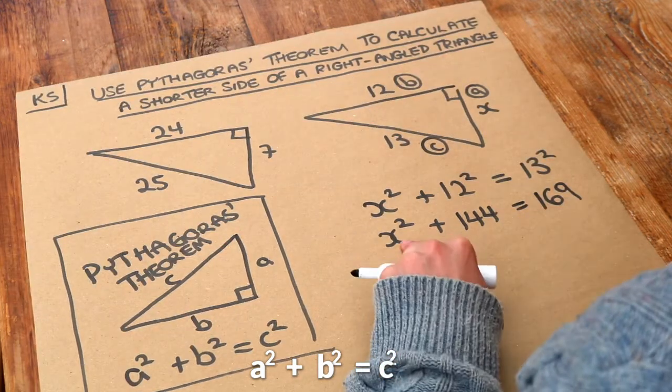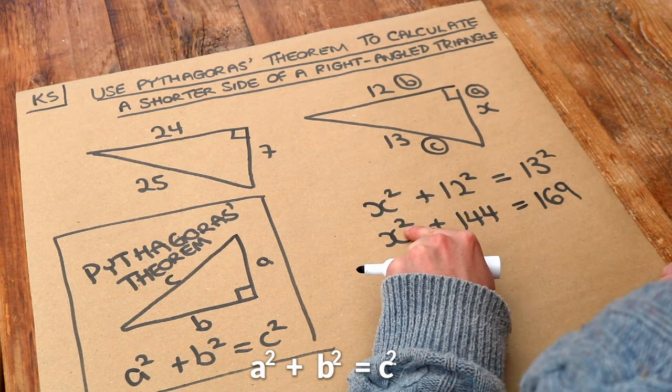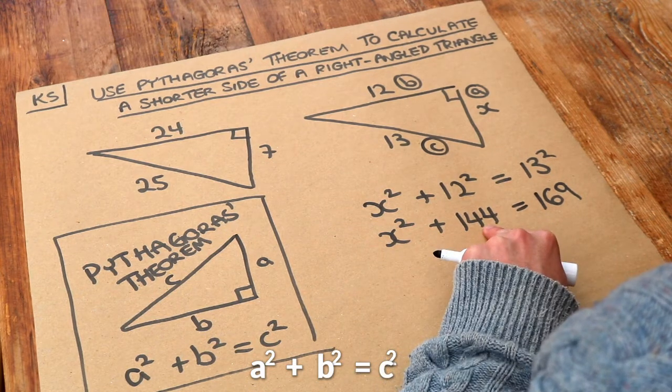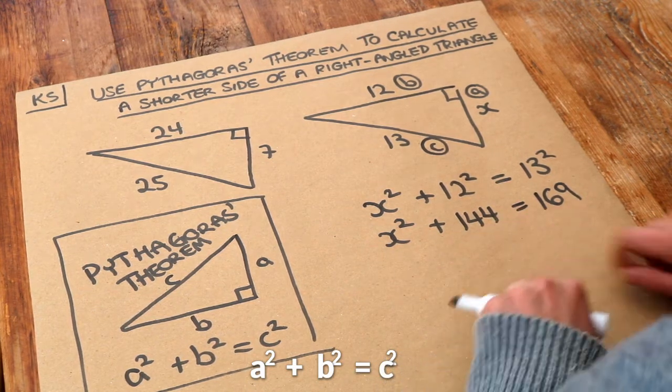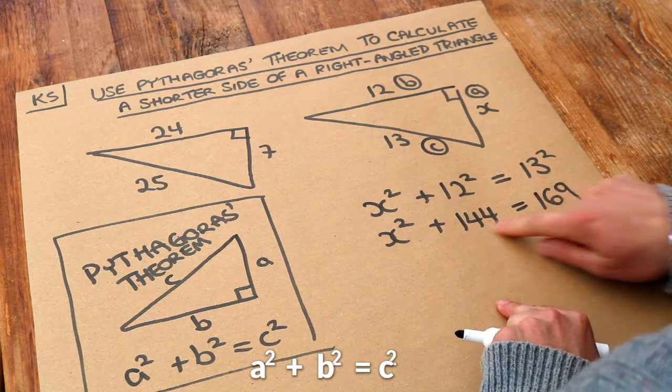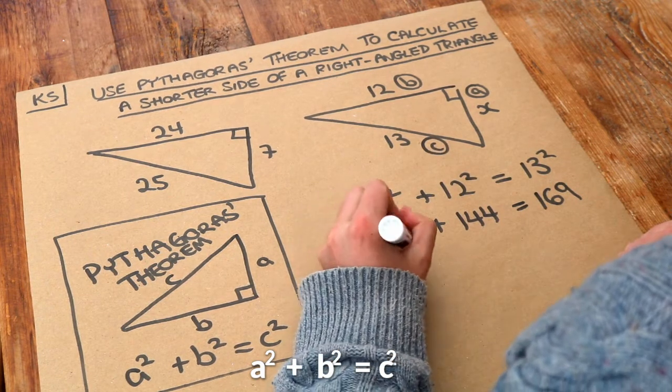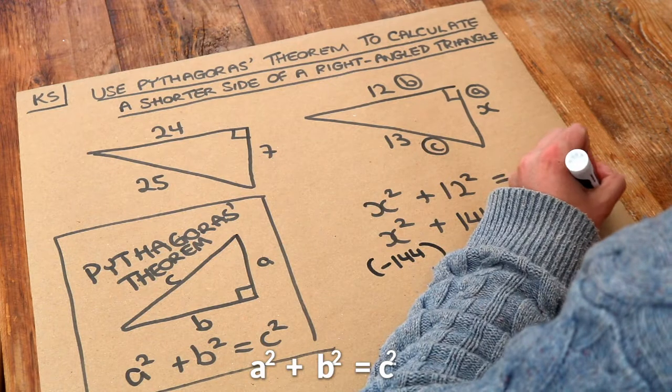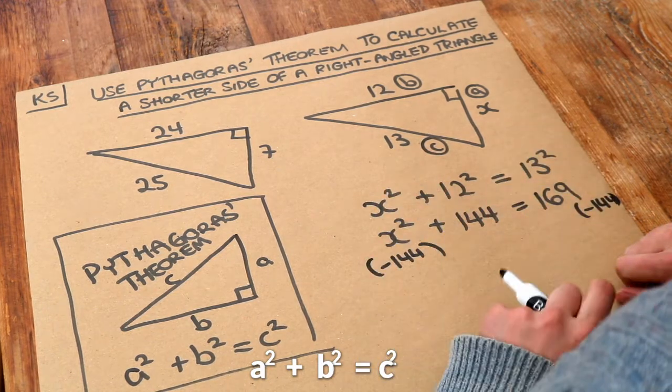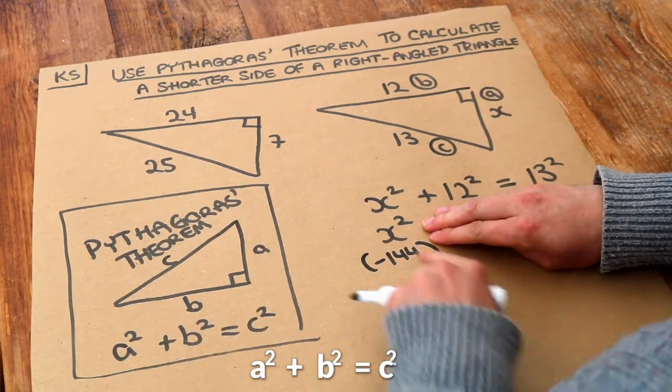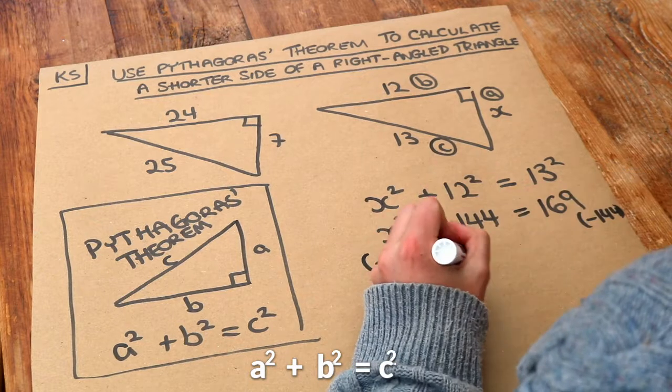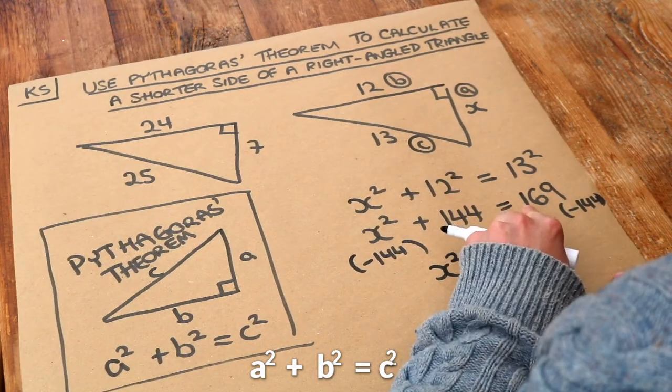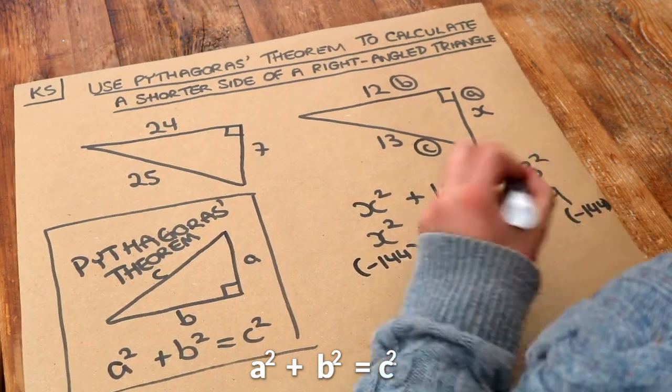And then we want to get X on its own. Well X has been squared, then we're adding 144 to get to 169. To get rid of that plus 144, we subtract 144 from each side. That gets rid of the plus 144 on the left-hand side, so we just get X squared left. And then 169 minus 144 is equal to 25.